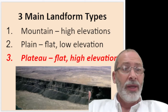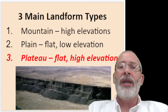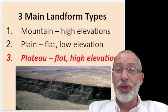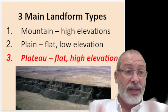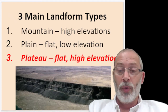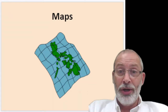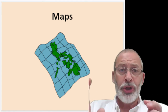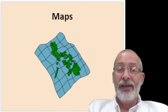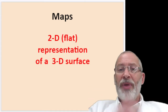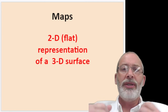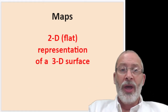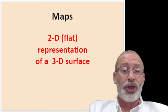These are the three main landform types — there are many more, so please don't think this is an exhaustive list. I'm limiting it to three because I want to continue into what we'll be working with this week in particular: maps. In the most basic sense, maps are a 2D or two-dimensional, flat representation of a 3D or three-dimensional surface.